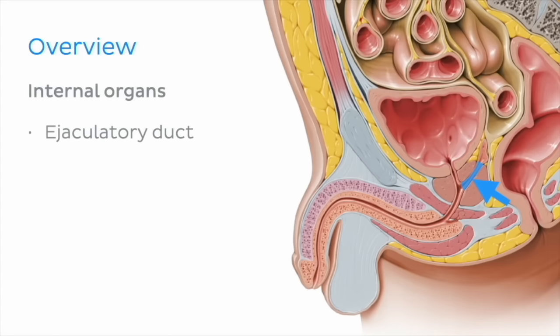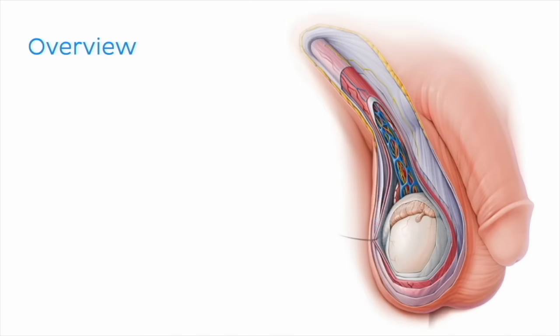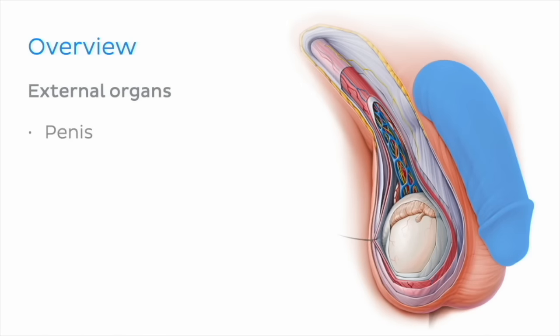The internal organs also include several accessory glands, including the seminal glands, the prostate gland, and the bulbo-urethral glands. The external organs include the penis and the scrotum.